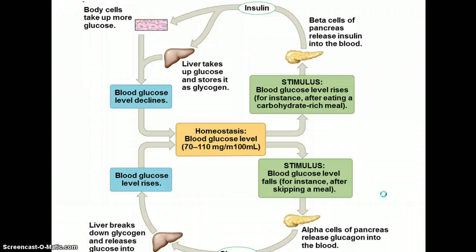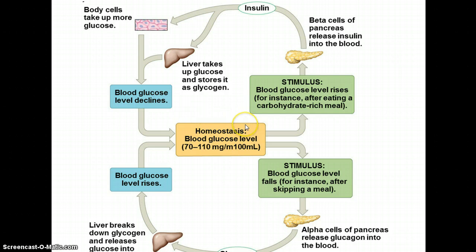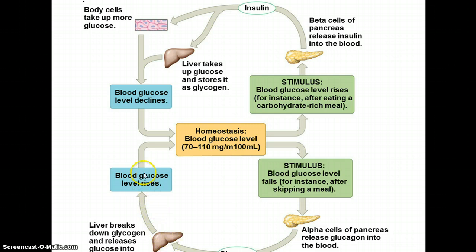Here's a good example of negative feedback involving blood sugar levels, where your pancreas is involved. You have some cells in your pancreas that release insulin, and insulin stimulates the liver and body cells to take up sugar and store it. If your blood sugar levels are too high, you store it. If they're too low, your pancreas releases glucagon, which causes the liver to break down sugar and release it. Using insulin and glucagon, both produced by the pancreas, attempts to maintain homeostatic blood sugar levels.